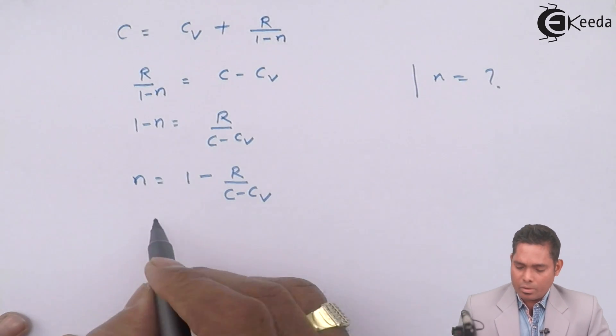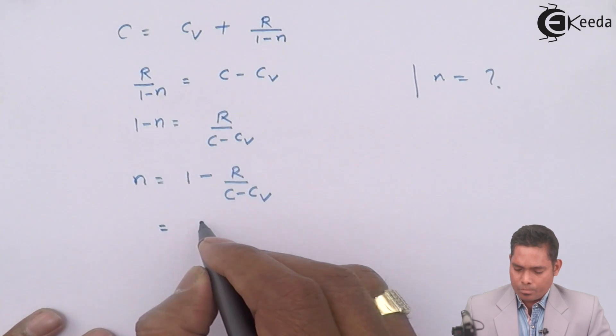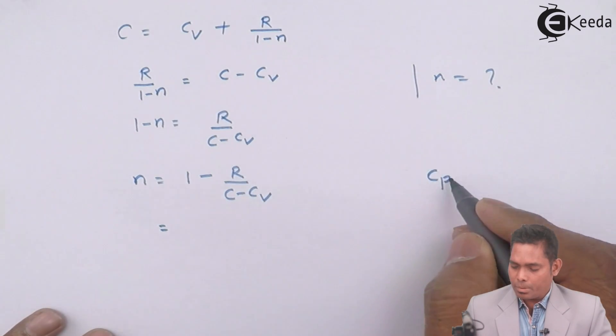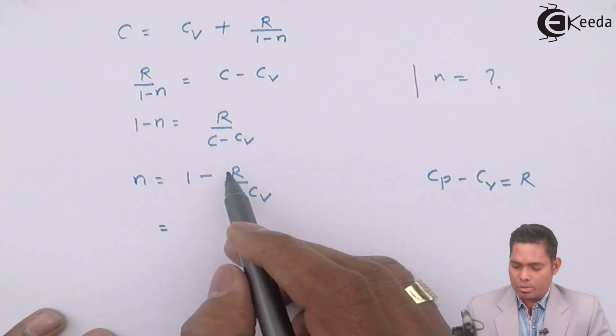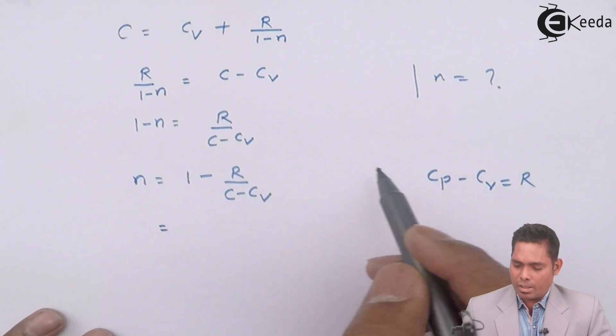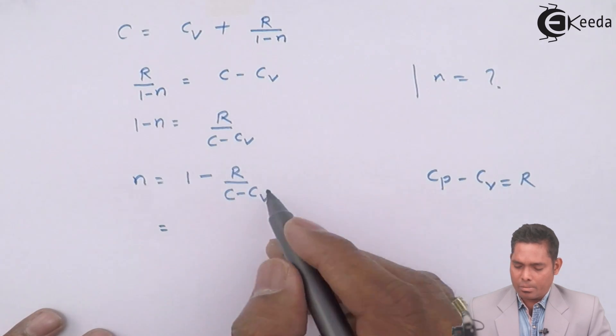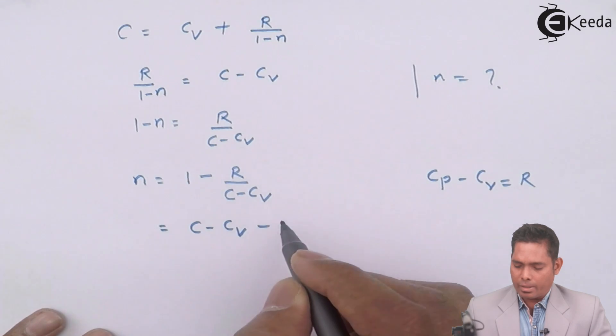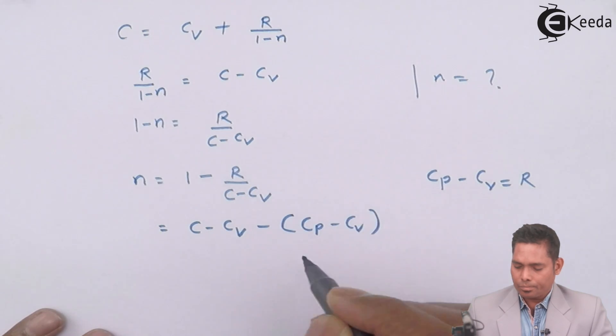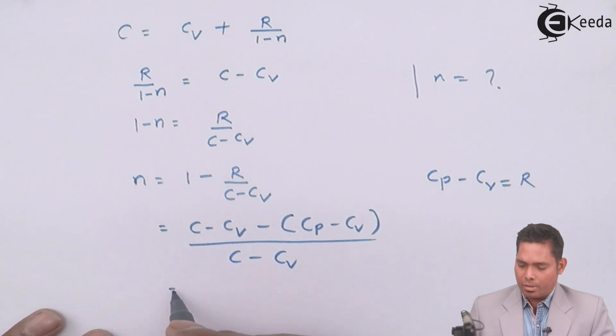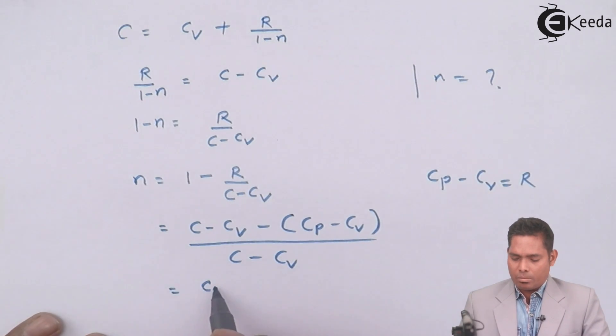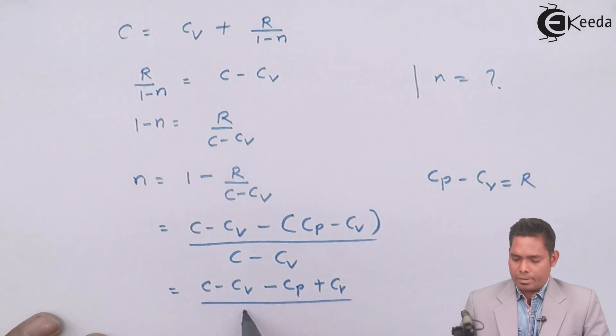Then I take the LCM. Then I will have, or I can put that, we know that Cp minus Cv equals R. So because in the options R is not there, Cp and Cv is there, then I can replace this R by Cp minus Cv. Or I can find the LCM and put this. If I take the LCM, this is C minus Cv minus R. In place of R, I will write Cp minus Cv divided by C minus Cv. Now this is C minus Cv. This minus goes to the interior and this becomes Cp and this becomes plus Cv divided by C minus Cv.